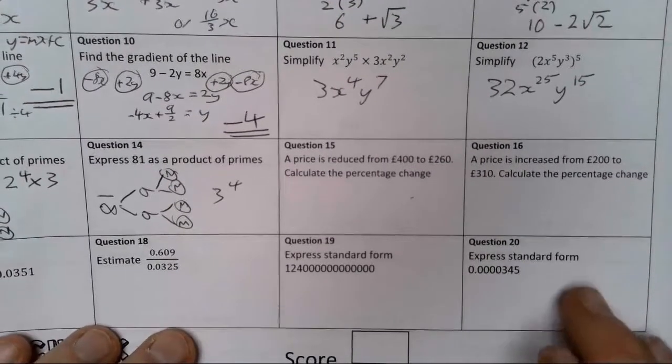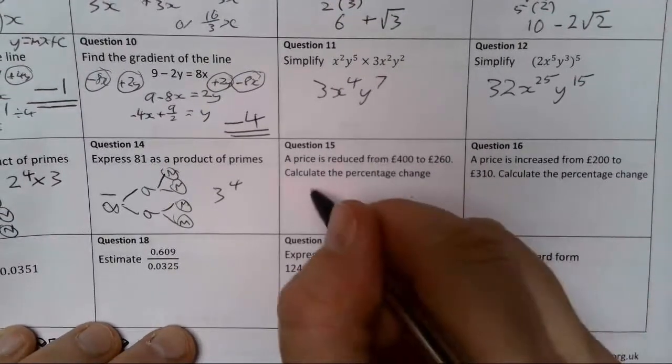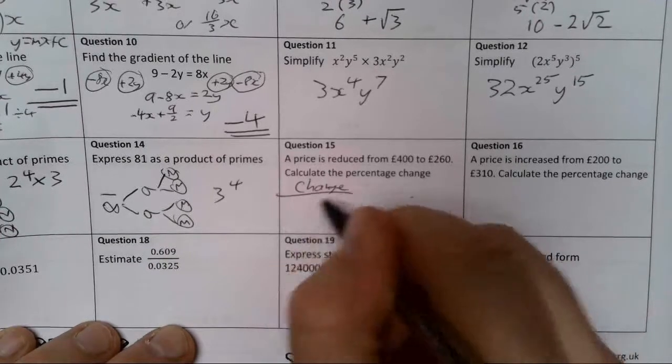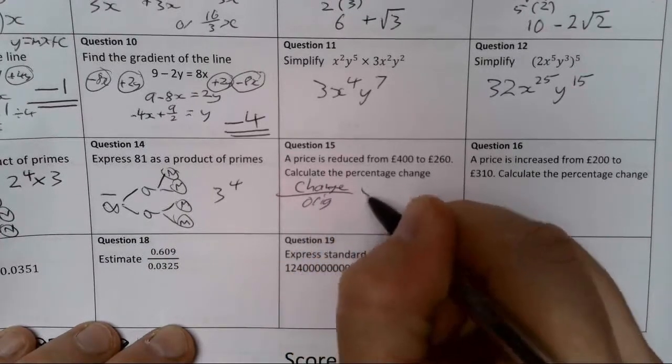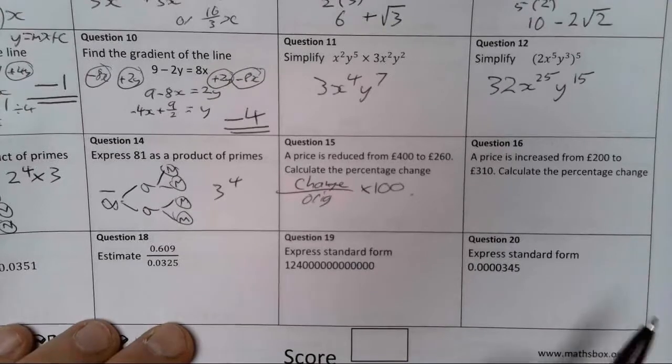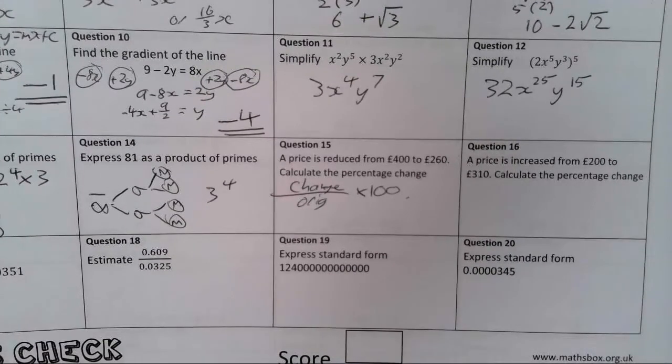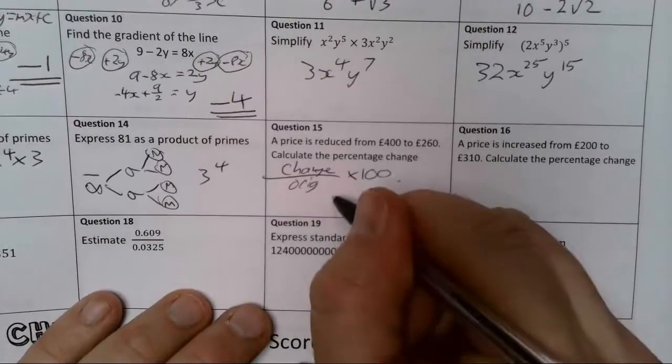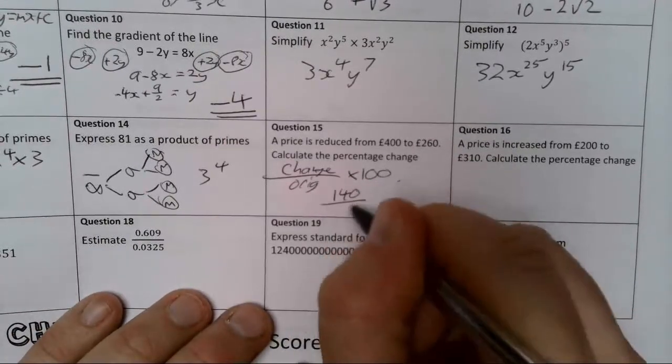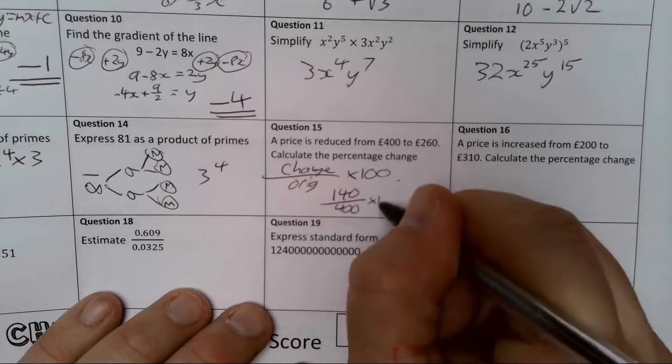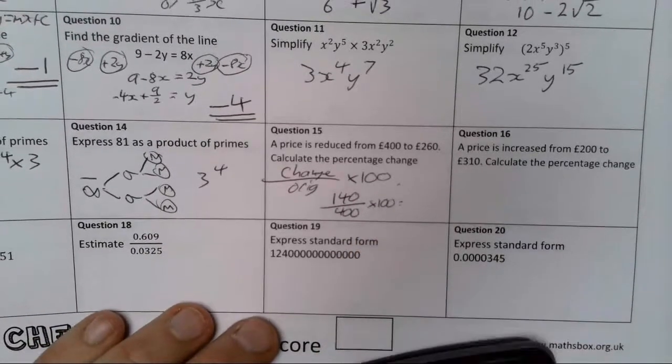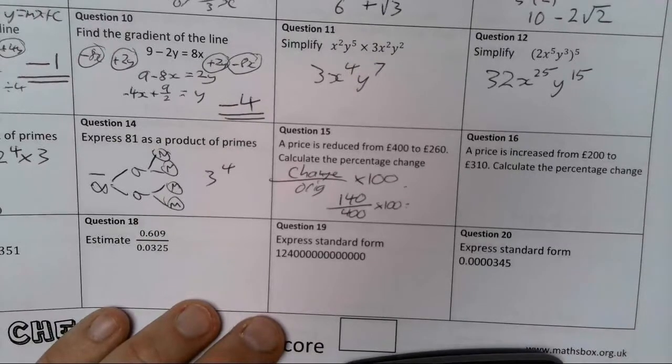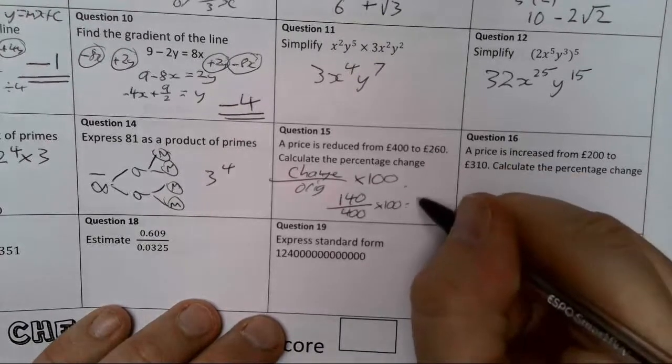The price is reduced from £400 to £260. Calculate the percentage change. So it's the change over the original, that's going to give you it as a decimal, so then you're just going to times it by 100 to give you it as a percentage. There are different ways of doing this, this is the way that I would favor. So that would give me 140 over 400 times by 100, and that gives me 0.35 or 35 percent.